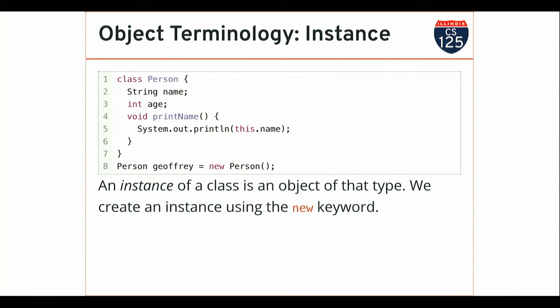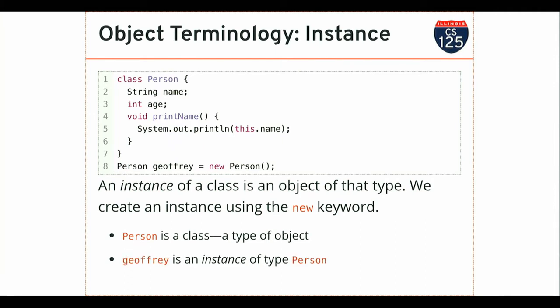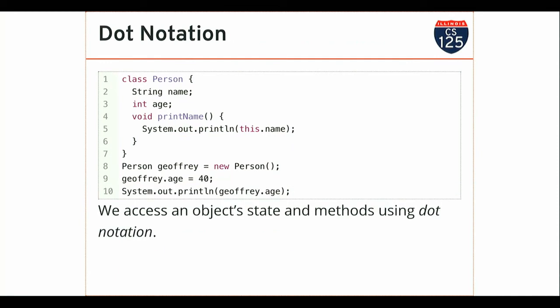There's no way to store a class — we store instances of classes. Person is a class; `jeffrey` here is a variable that stores an instance of that class. So now `jeffrey` has a specific name and a specific age. The way that we access the state and behavior of a class is by using dot notation on an instance of that class.